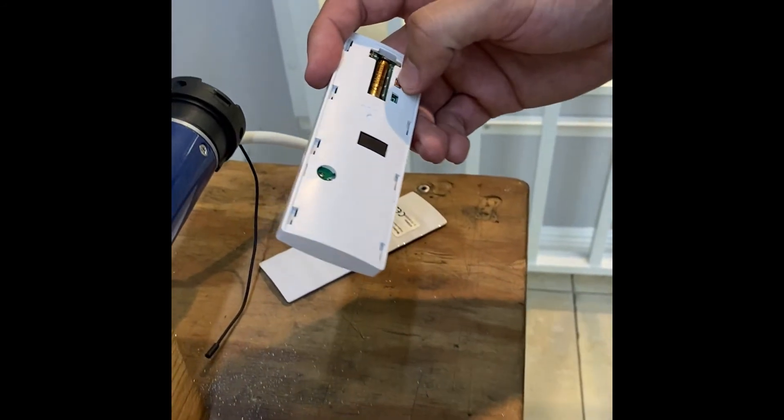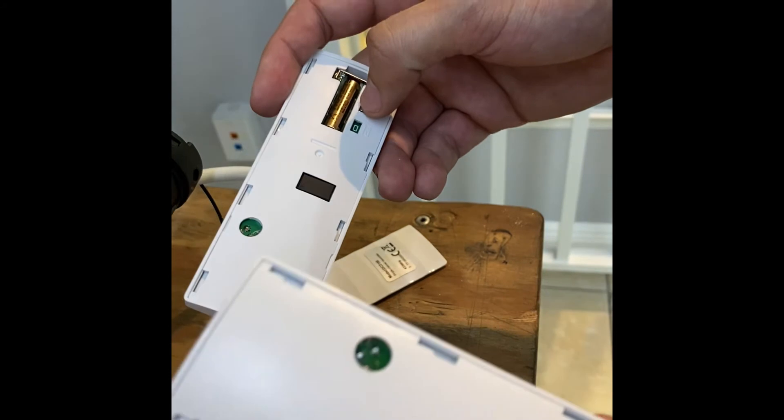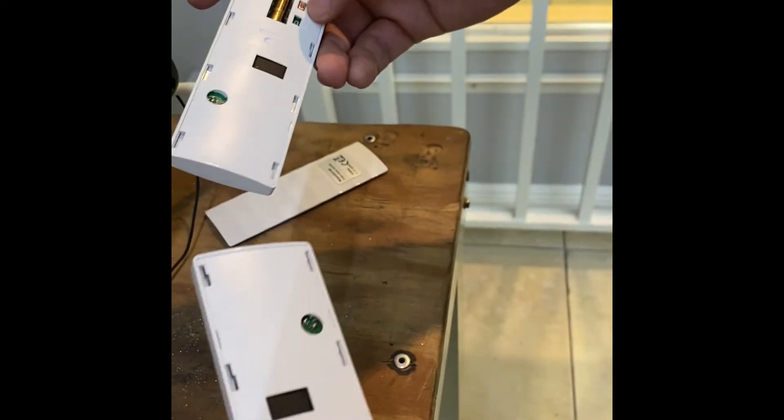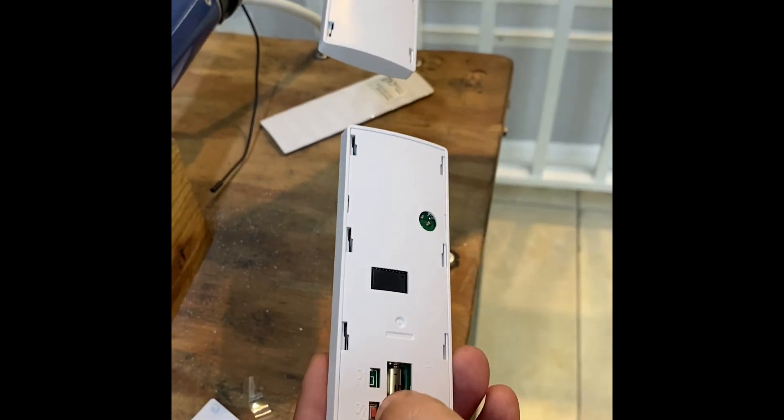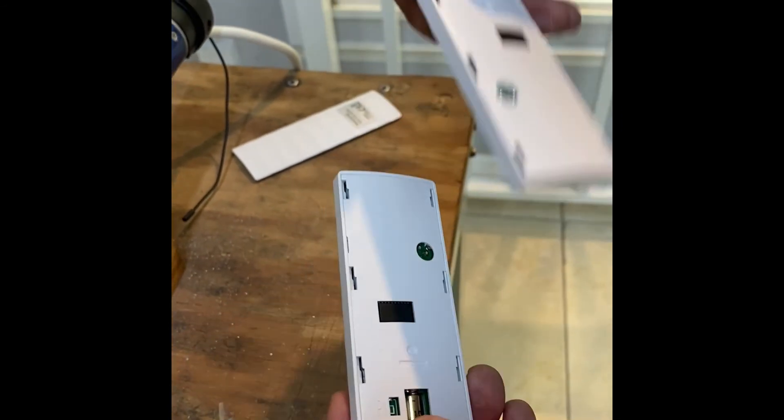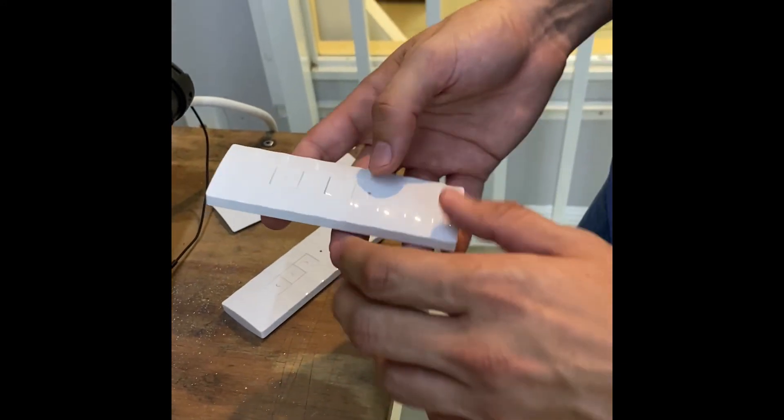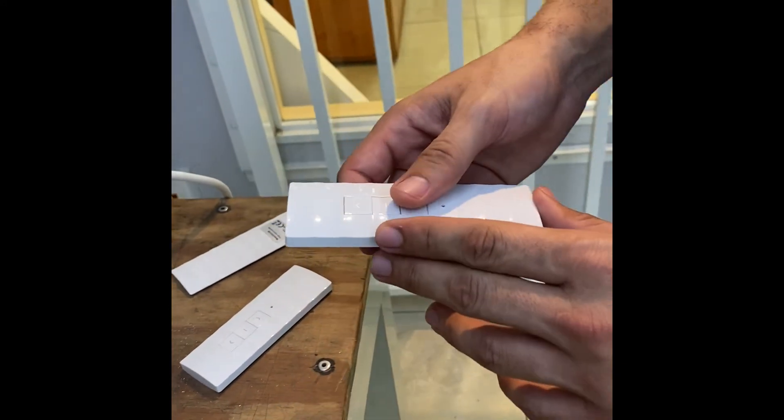On the original remote press P2 twice followed by P2 once on the new remote. This all has to be done within five seconds. The audible beeps confirm the successful cloning.